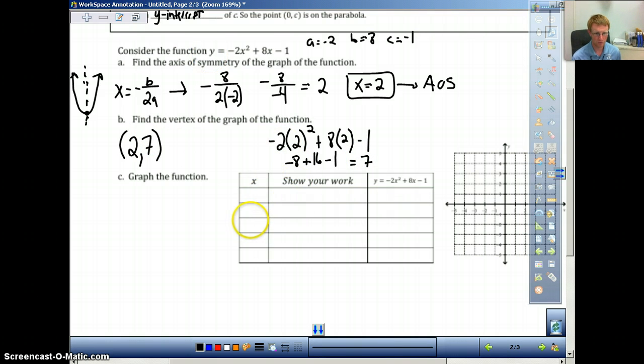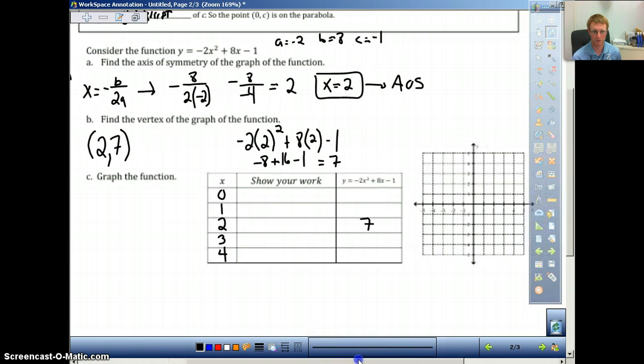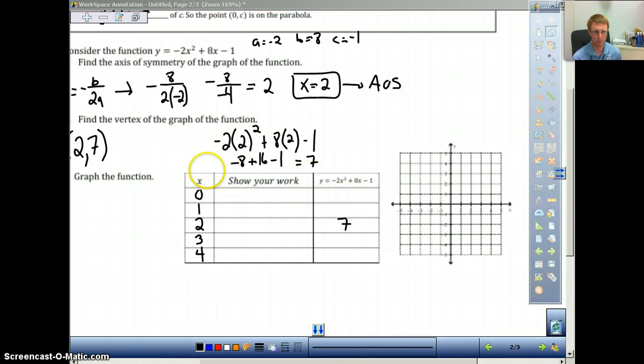When we graph our function, we will always put the vertex in the center. We don't need to show our work there. We already did that. There's our vertex. Now, what we'll do is we'll just pick values on both sides. 0, 1 is to the left of 2, and 3 and 4 is to the right of 2. And then, literally, all we're going to do is plug these values in to get what our parabola looks like.